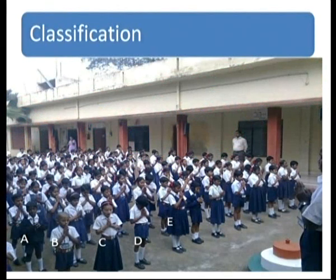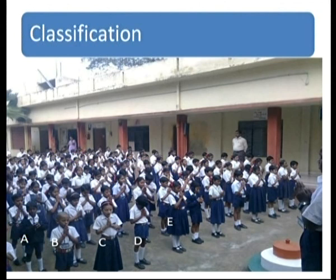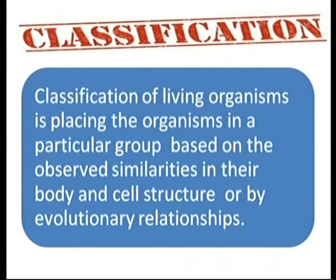What is classification? Suppose there are 800 or 900 students in your school and it is very difficult for the principal to remember each one. They would group the students into categories — sections A, B, C, D — on some criteria such as age group or stream. In the same way, classification of living organisms means placing organisms in a particular group based on observed similarities in body and cell structure, or by evolutionary relationships.